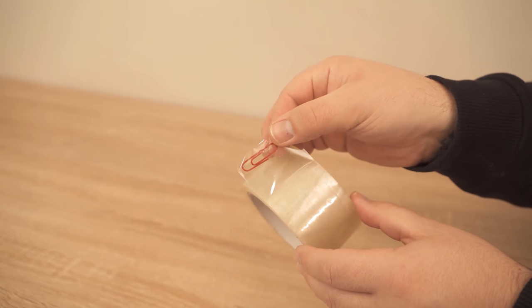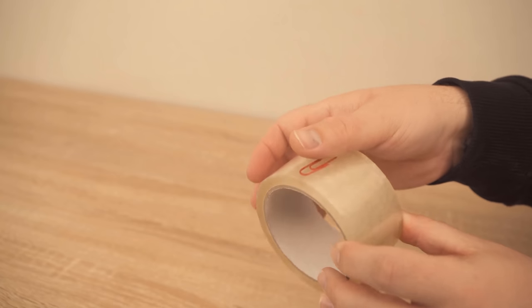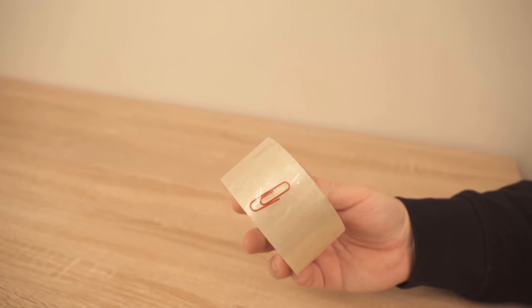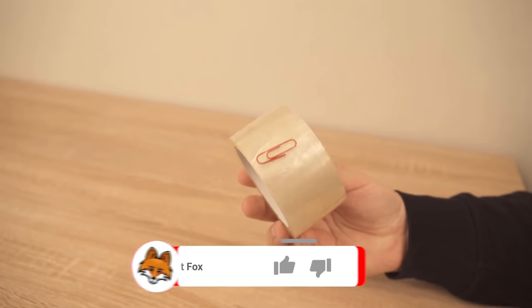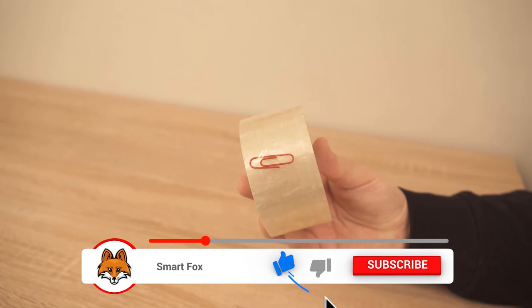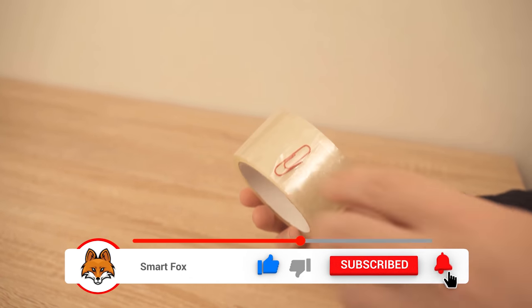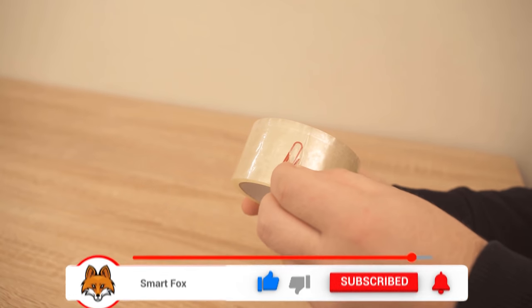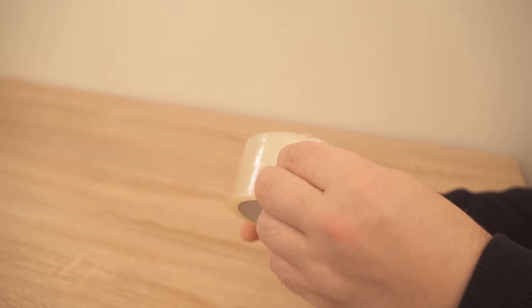Now you always have the beginning, and since the whole thing sticks to the paperclip, it's easier to get it off. This means you don't have to peel off the beginning of the tape like crazy, but can take it off directly and use the tape roll immediately.